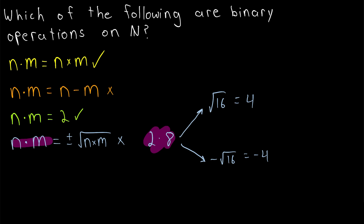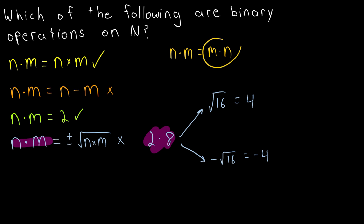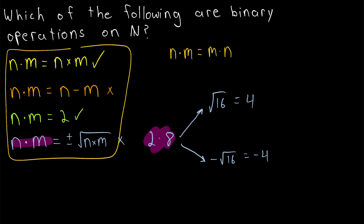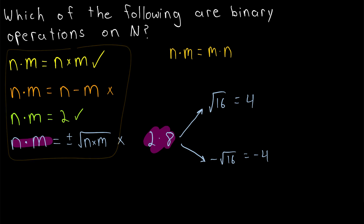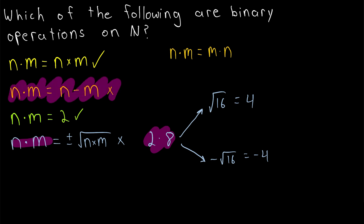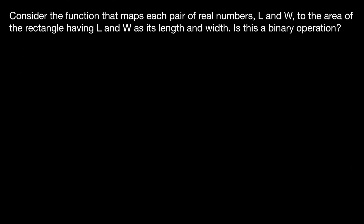As a quick side note, recall that a binary operation is commutative if the order the operation is carried out in doesn't matter, so that n times m would be the same as m times n. Which of these operations are commutative? The answer is they are all commutative except for subtraction.